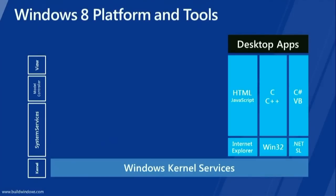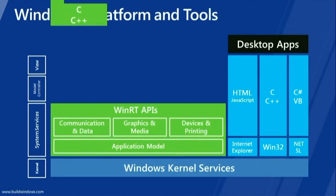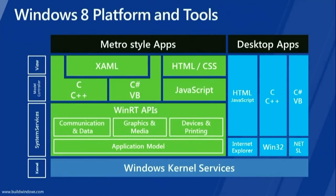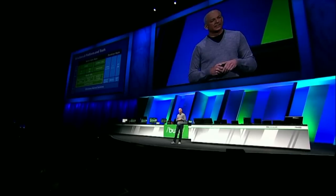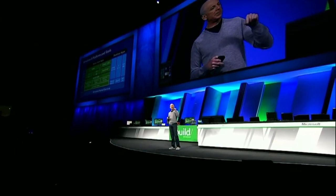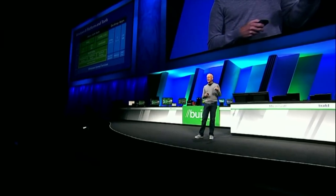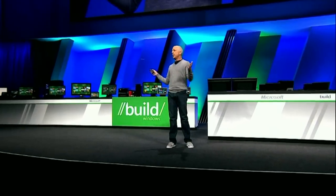What I want to show you is the bold move we made to reimagine the Windows 8 platform. The Windows 8 platform for Metro-style applications lets you pick the language you want to use. No matter what tool you want to use, we've got a language for you. We start with the Windows kernel — the most robust, reliable, scalable kernel that exists — and we're bringing it forward. What we've done is reimagined the Windows APIs, which we call the Windows Runtime, or WinRT.